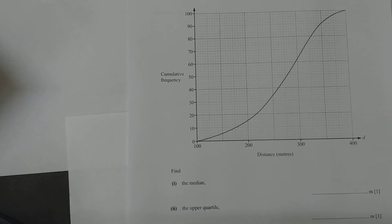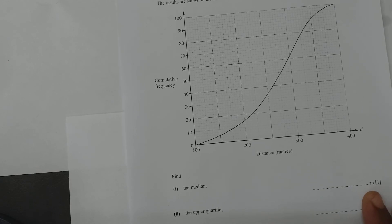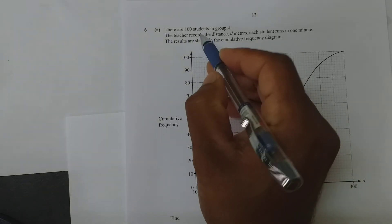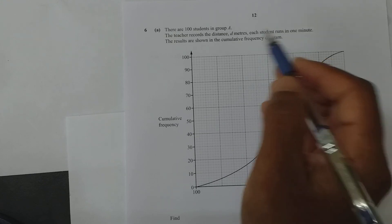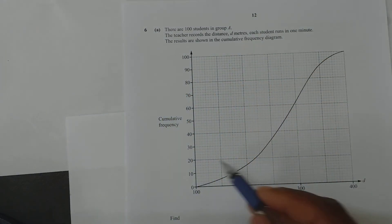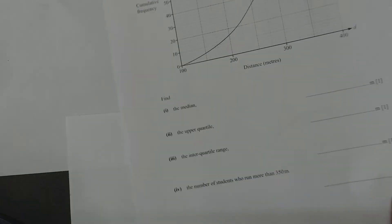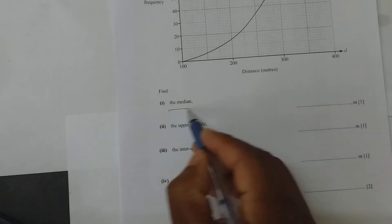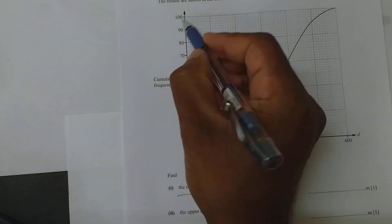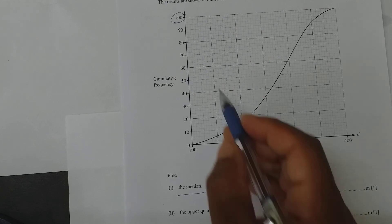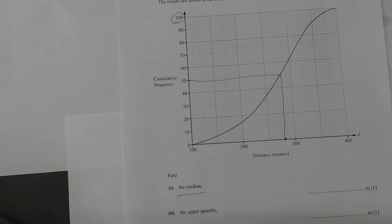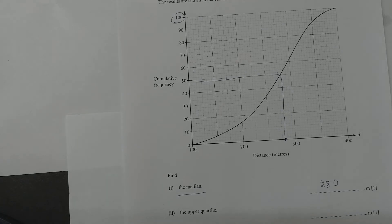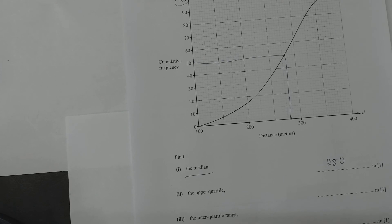Next sum: there are 100 students in group A. The teacher records the distance d metres each student runs in one minute. Results are shown in the cumulative frequency diagram. Find the median: total is 100 students, so the median is at 50. Draw a line at 50 — the answer is close to 280.